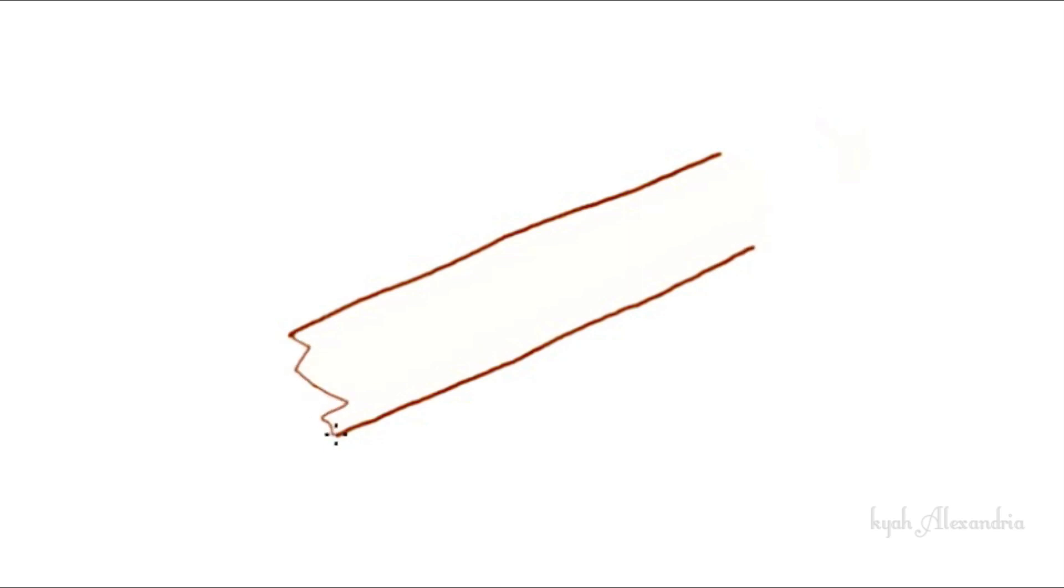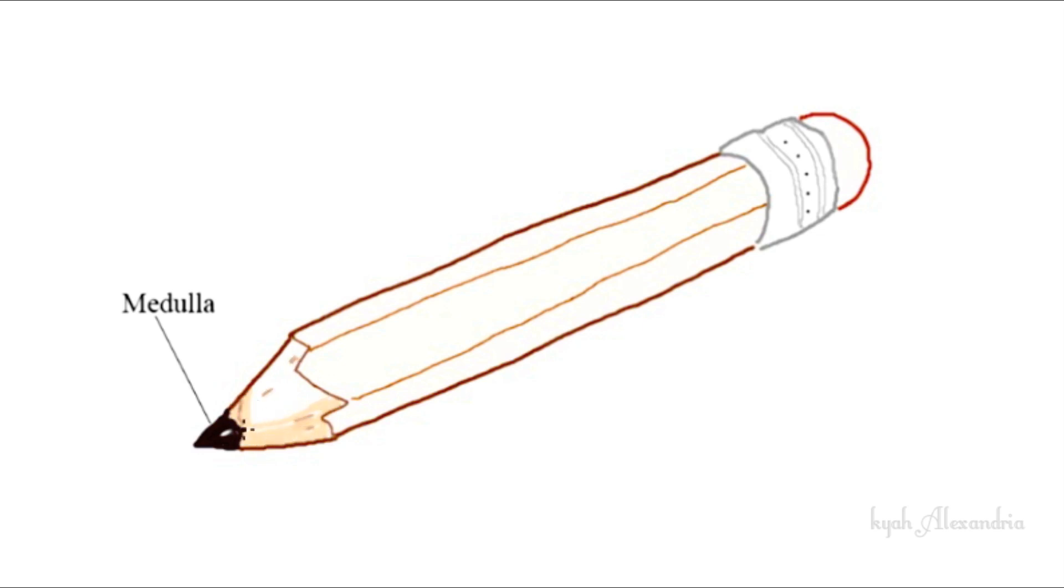Let's take a look at a number two pencil. It is great to compare to that of the structure of hair. The graphite, which is in the middle of the pencil, is similar to the medulla. The wood of the pencil is similar to the cortex of the hair. The yellow painted outside of the pencil, or the color part of the pencil, is similar to the cuticle.